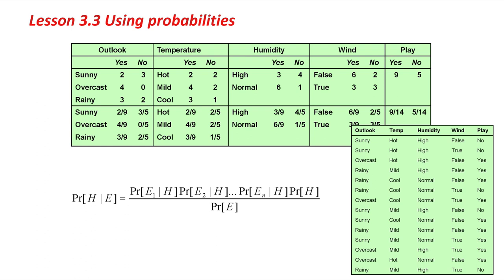Let's say we know the hypothesis. That is, let's say we know it's a Yes. Then the probability of it being sunny is two-ninths, overcast four-ninths, and rainy three-ninths, simply because when you add up 2 plus 4 plus 3 you get 9. Those are the probabilities. If we know that the outcome is No, the probabilities are sunny three-fifths, overcast zero-fifths, and rainy two-fifths. That's for the Outlook attribute.